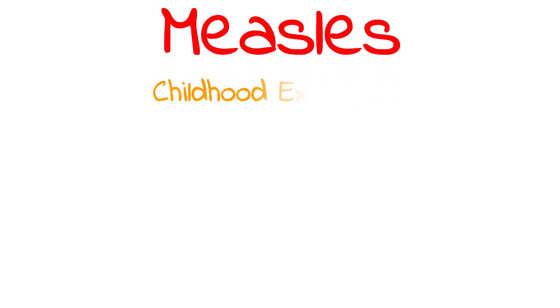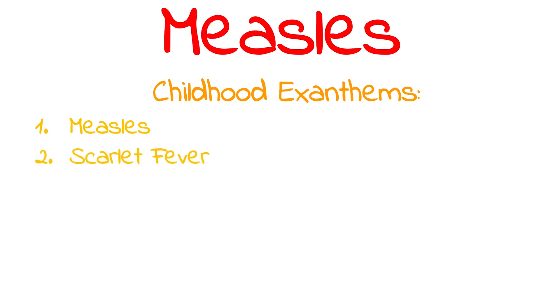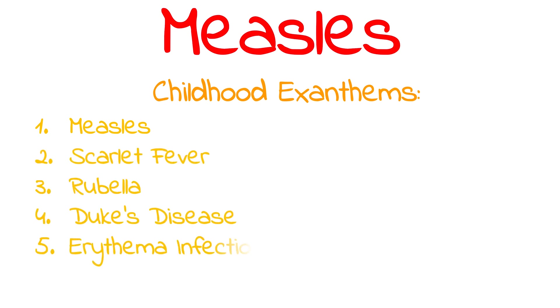Measles is the first of six childhood exanthems, and in order they are: measles, scarlet fever, rubella, Duke's disease, erythema infectiosum, and roseola infantum.